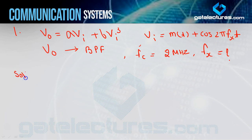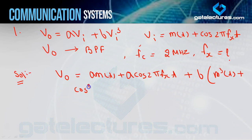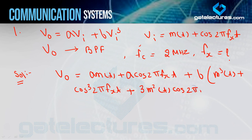Starting the solution: we are given VI and V0 in terms of VI. First let us calculate V0. It becomes: A·m(t) + A·cos(2π·FX·t), plus B·VI³ which expands using (A+B)³ formula giving A³ + B³·cos³(2π·FX·t) + 3A²B terms — that is 3·m²(t)·cos(2π·FX·t).